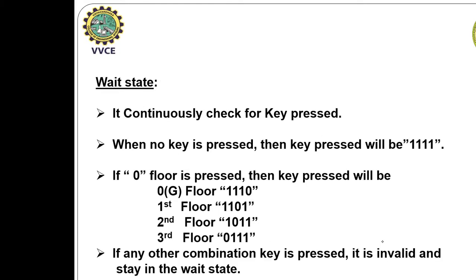In the wait state, it continuously checks for a key pressed. When no key is pressed, the key pressed value is 1111. If the ground floor (0th floor) is pressed, the key pressed is 1110. First floor: 1101. Second floor: 1011. Third floor: 0111. Any other combination is invalid.